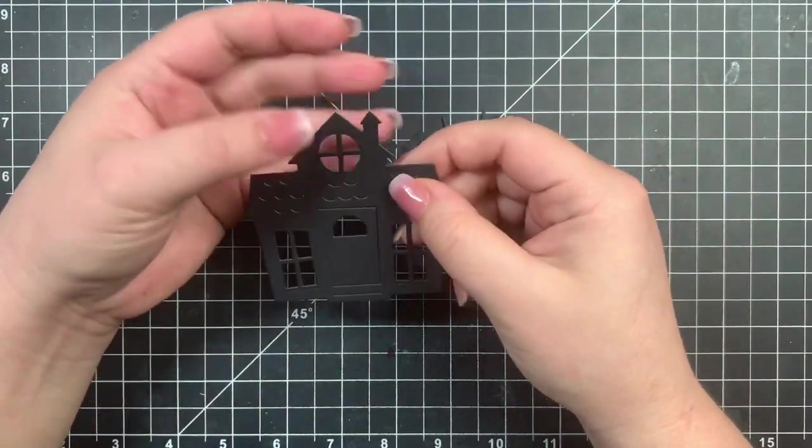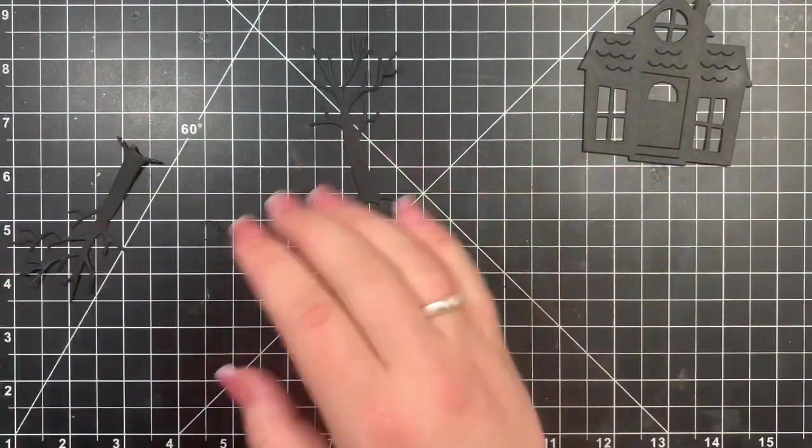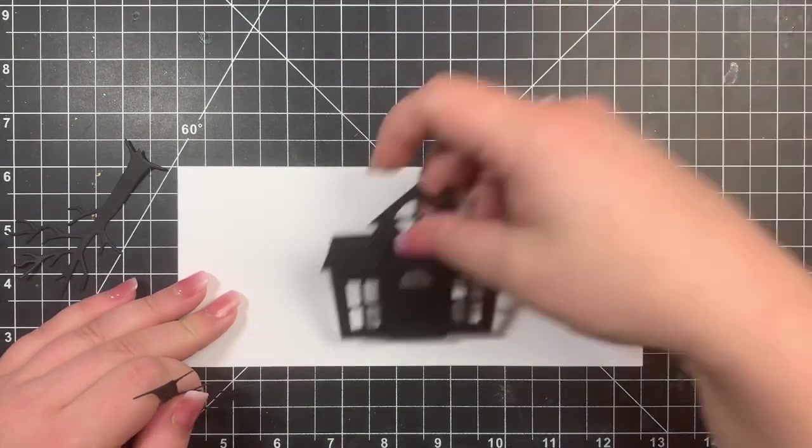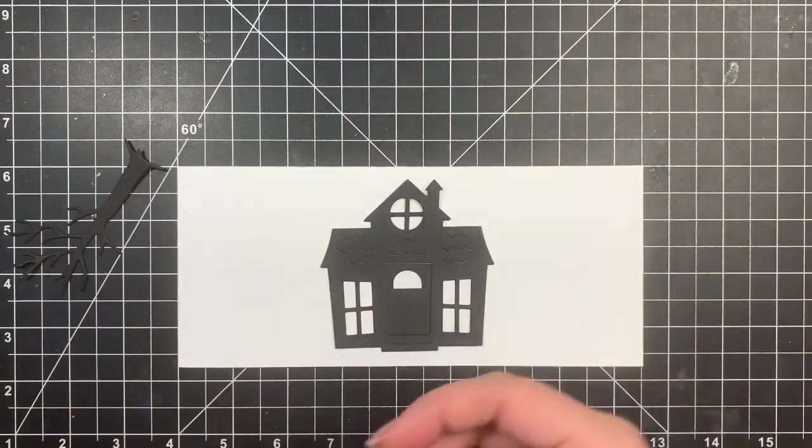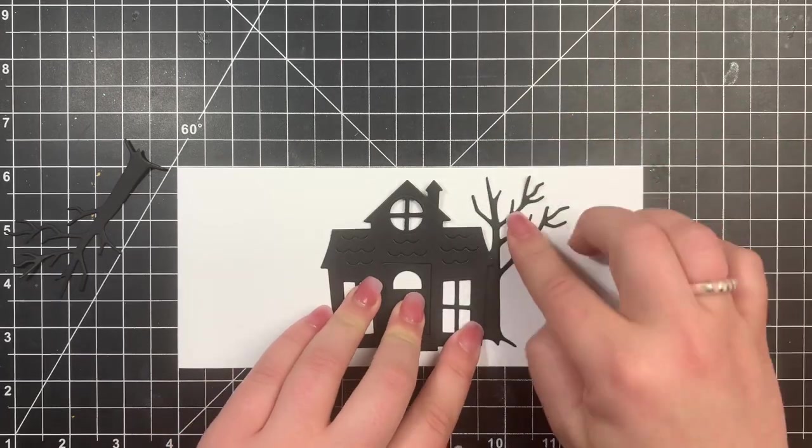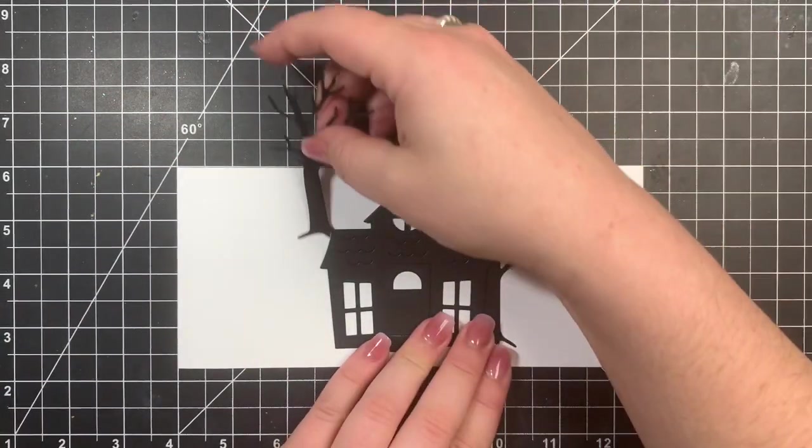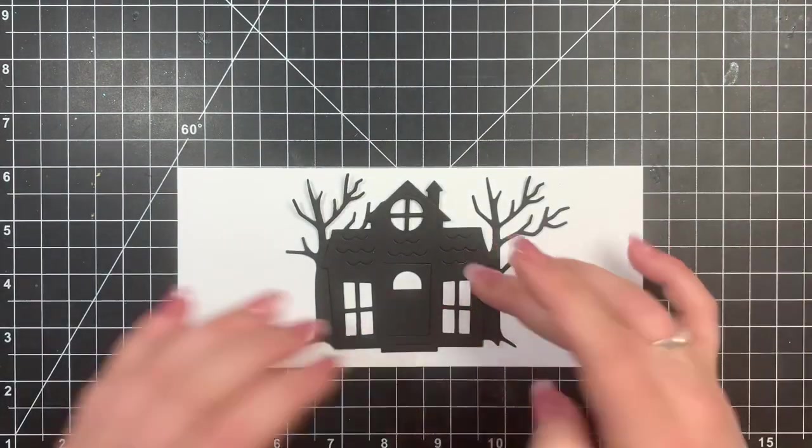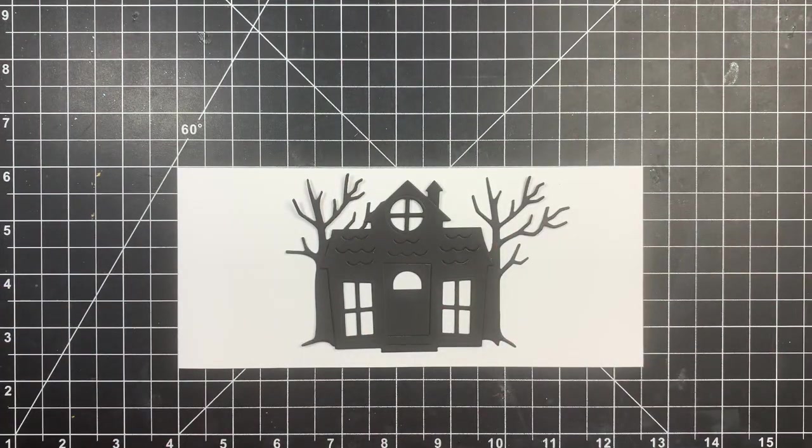So I went ahead and die cut my little haunted house as well as two of these trees from black cardstock. I'm going to be making a slimline card just because I want to be able to fit a bunch of things on it. I'm going to kind of line up my haunted house and my trees just for placement. I'm not sticking them down, I'm just laying them down for placement before I actually do my stamping.